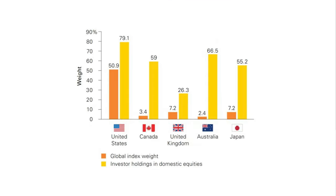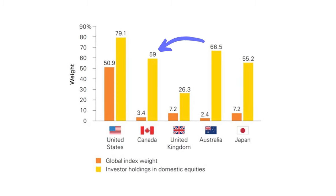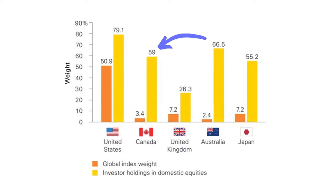Did you know that the Canadian stock market only makes up 3% of the global stock market cap? But Canadian investors still hold 59% of their equity investments in Canadian stocks. It's not just Canada — it happens in every country. This phenomenon is called home country bias. If you want to know why this is dangerous and 4 more ETF risks to avoid, watch this video till the end.